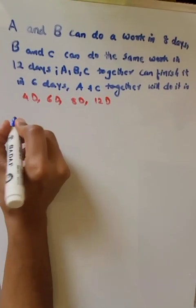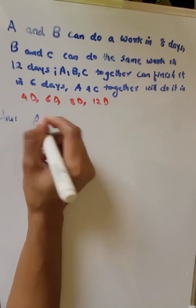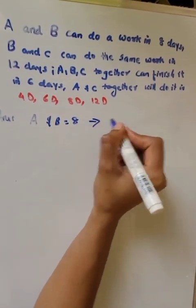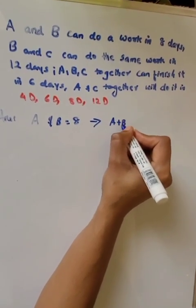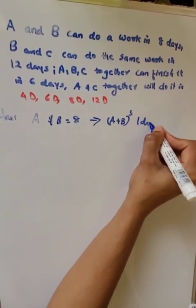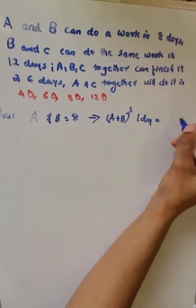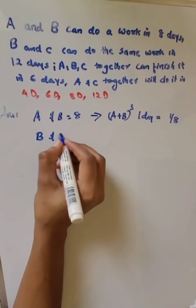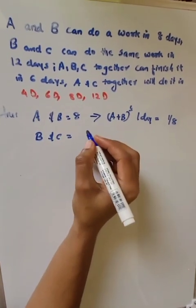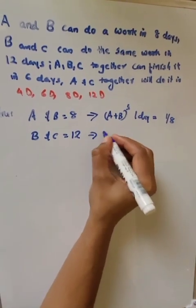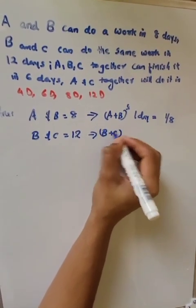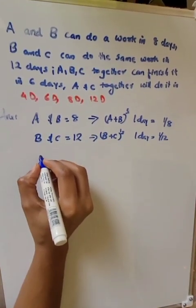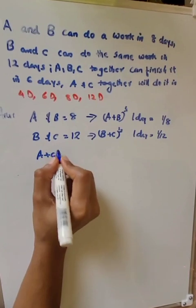In our question it is given A and B can do the work in 8 days. So A and B's one day work we can write as 1 by 8. Similarly, B and C can do the same work in 12 days, so B and C's one day work is 1 by 12.